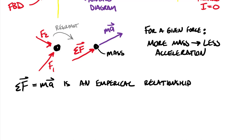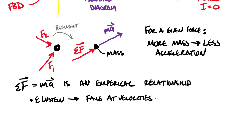Until 1905, it was thought that Newton's second law applied to all particles without exception. But then Einstein came along with his theory of relativity, pushing the boundaries of velocities up to the speed of light. They found that because around the speed of light time becomes non-linear, Newton's second law fails at velocities approaching the speed of light.